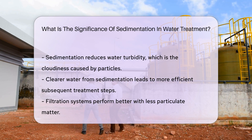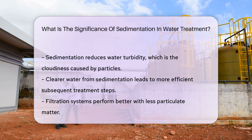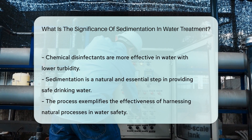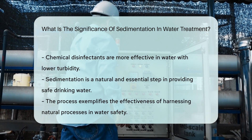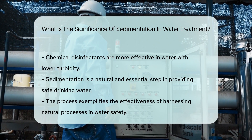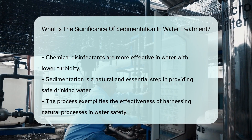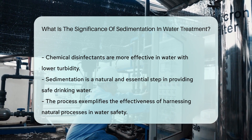Sedimentation is crucial for reducing water turbidity — the cloudiness caused by particles. Clear water is not just aesthetically pleasing; it's also safer for the next treatment steps. Filtration systems work better with less debris, and chemical disinfection is more effective in clearer water. Sedimentation is a silent hero in producing clean, safe drinking water. It's a testament to the elegance of using natural processes, and it's one important step in ensuring water safety for communities.